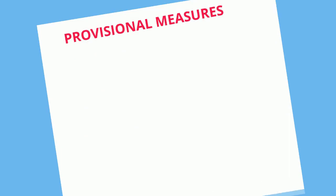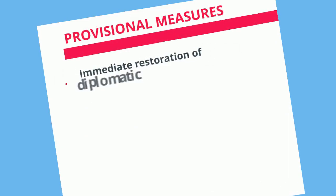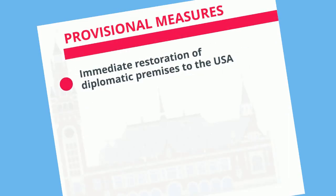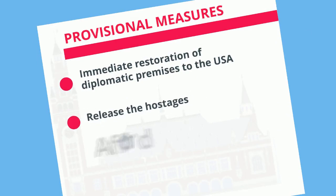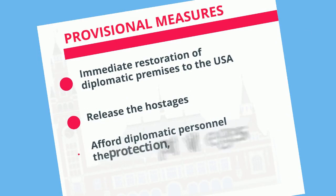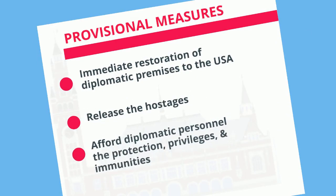The World Court indicated provisional measures requiring Iran to ensure the immediate restoration of diplomatic premises to the USA, to release the hostages, and to afford all diplomatic personnel the protection and immunities to which they were entitled.